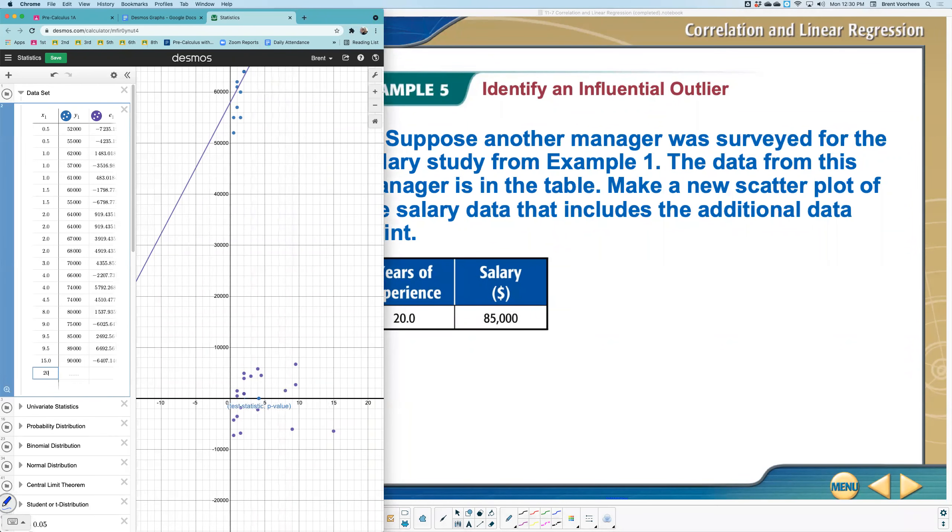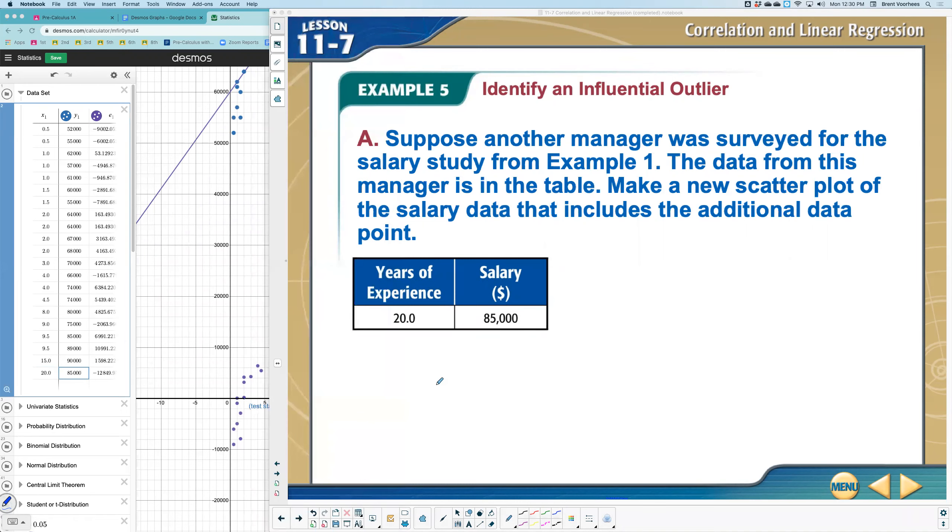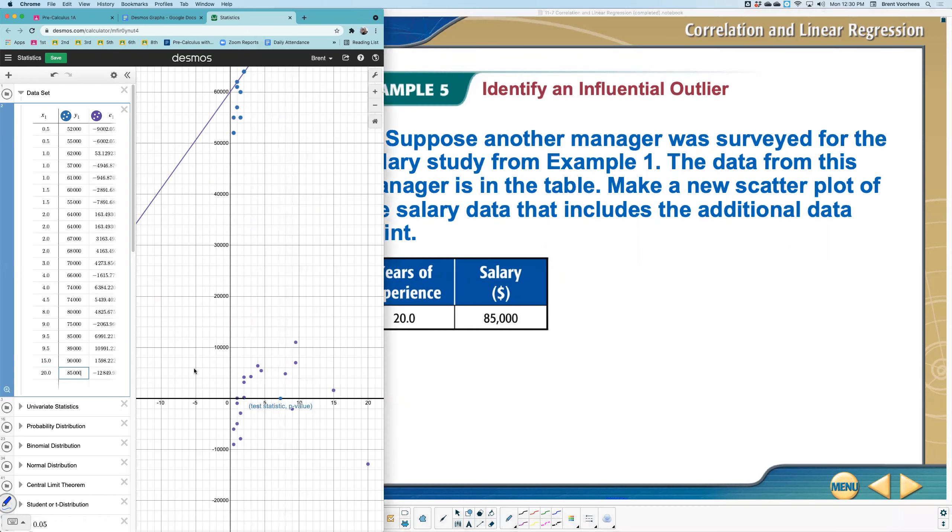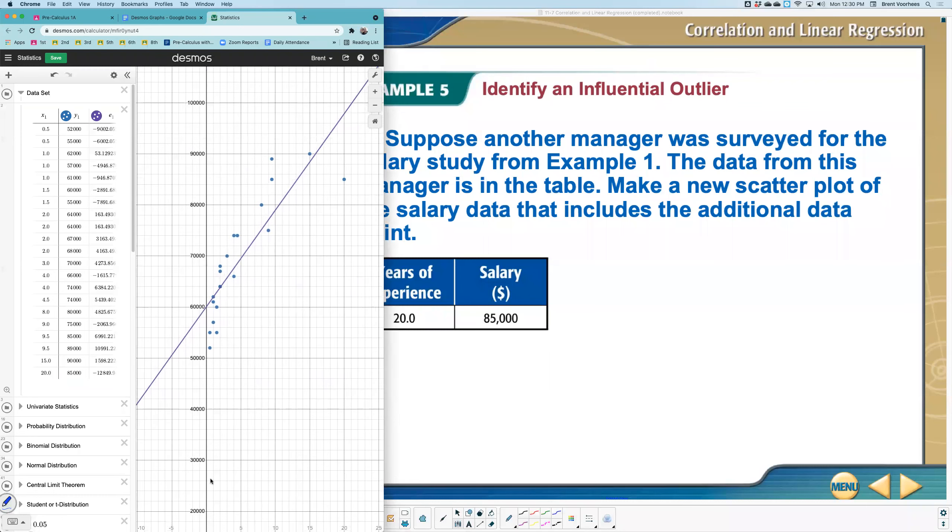We're going to say they have 20 years of experience and they make $85,000. And so once I do that, all my data shifted around. We've made the new data for a scatter point, and so here it is right there.